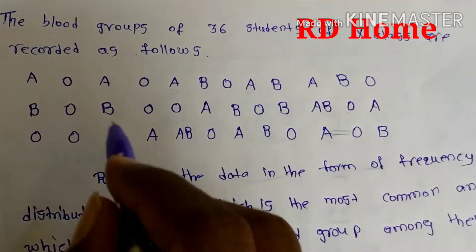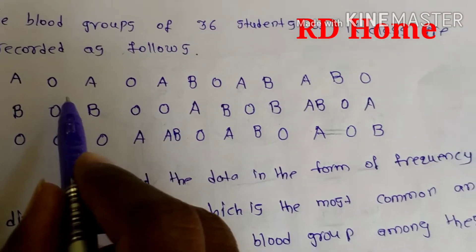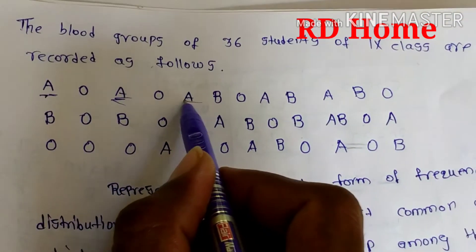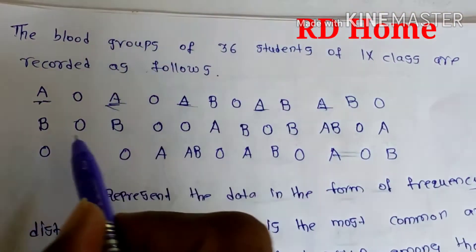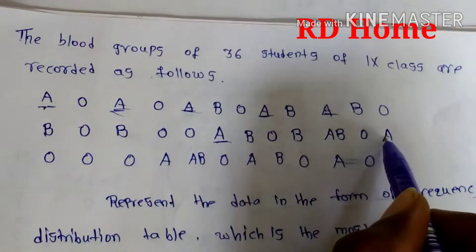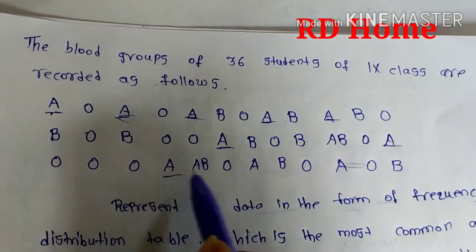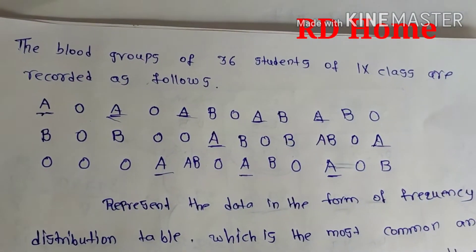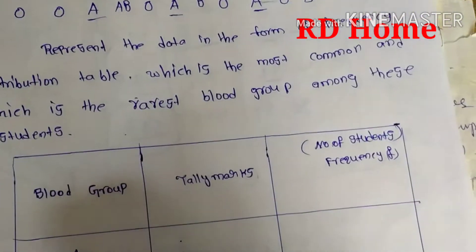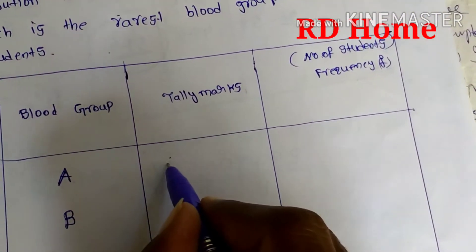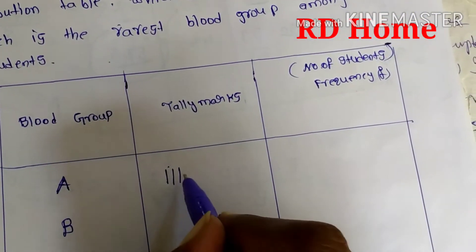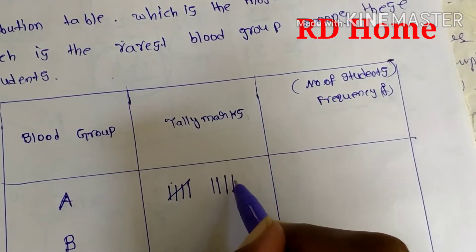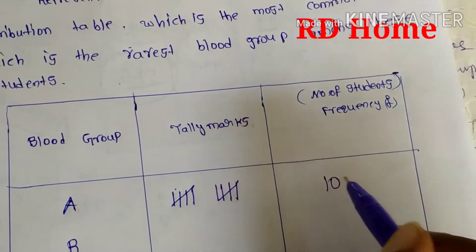Now, how many A groups are there? Counting: 1, 2, 3, 4, 5, 6, 7, 8, 9, 10. You can write here 10 tally marks — that means we mark 1, 2, 3, 4, 5, 6, 7, 8, 9, 10. The frequency for blood group A is 10.